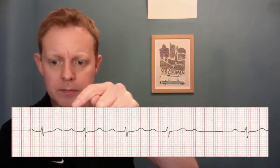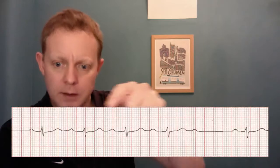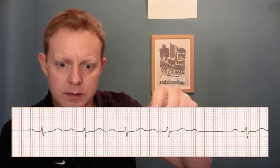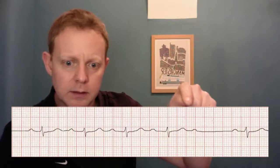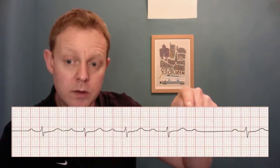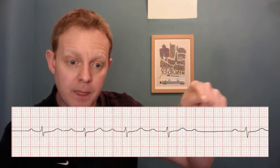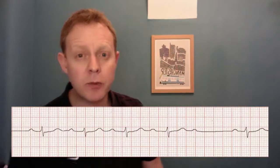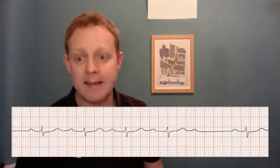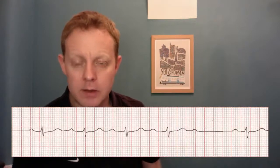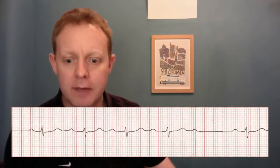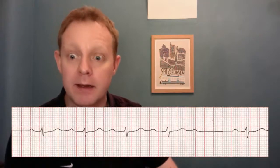This one is a bit longer. This one is longer still. This one longer still. Then we have no QRS complex following this P wave, and then we have a P wave and a QRS complex. So we've got a progressively lengthening PR interval until we drop a beat.